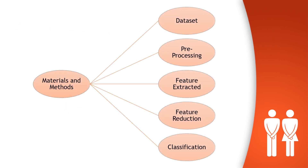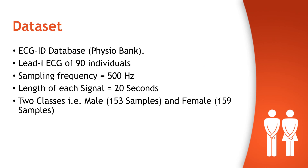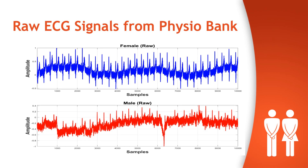In the materials and methods portion, we will see dataset, preprocessing tool, feature extraction, feature reduction, and classification. Our dataset was obtained from Physiobank, which has a database named ECG-ID. The dataset contains ECG recordings of 90 individuals with a sampling frequency of 500 Hz and a signal length of 20 seconds. There are two main classes: male and female, and a total of 312 samples were obtained. You can see raw ECG signals from Physiobank — the blue represents female samples whereas the red represents male samples.